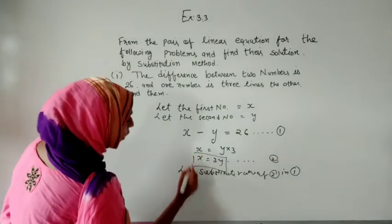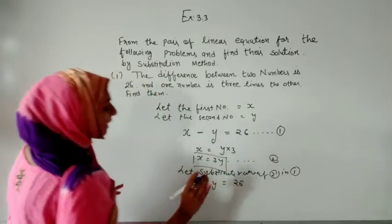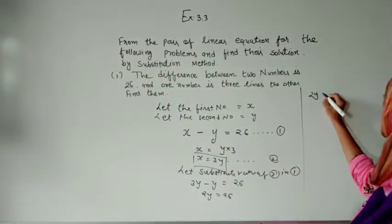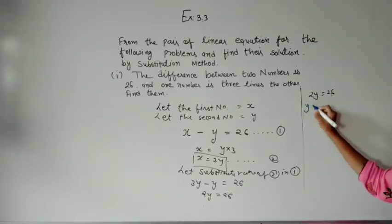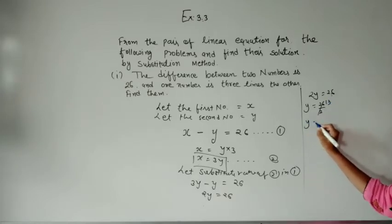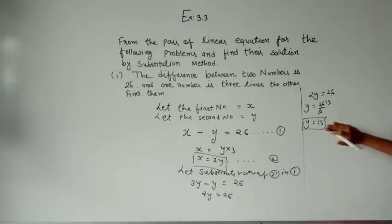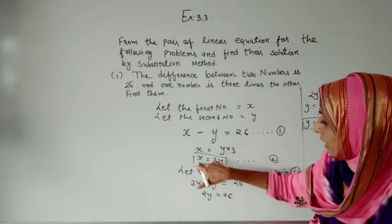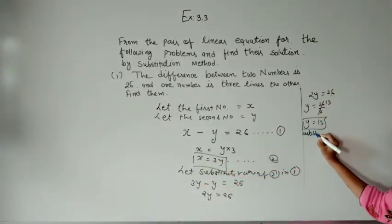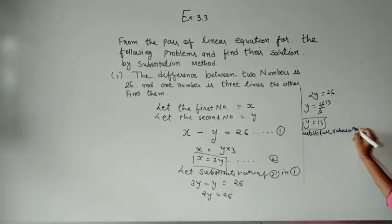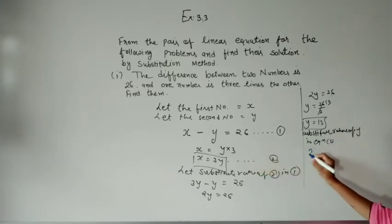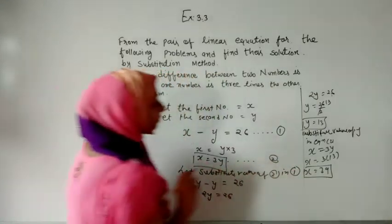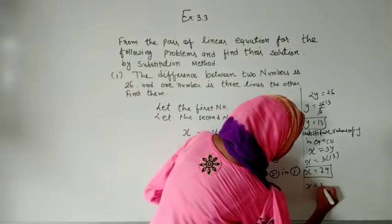Substituting x equals 3y into equation 1: 3y minus y equals 26, giving 2y equals 26. Dividing by 2, y equals 13. Now substituting y equals 13 into equation 2: x equals 3 times 13, so x equals 39. We have two values: x equals 39 and y equals 13.